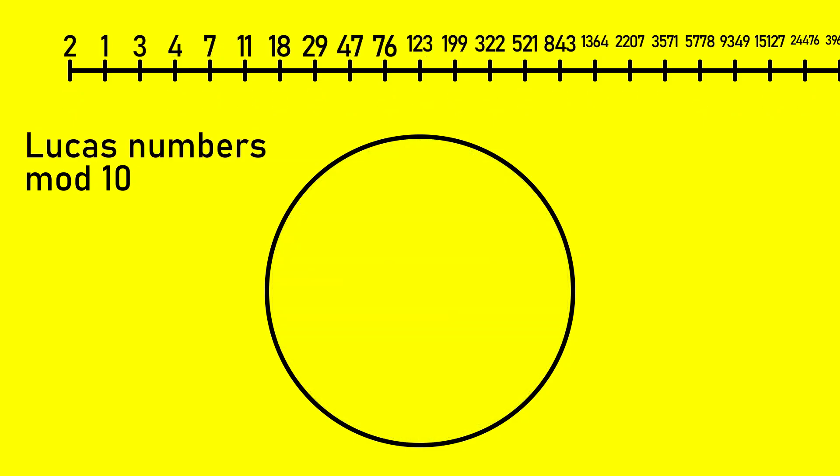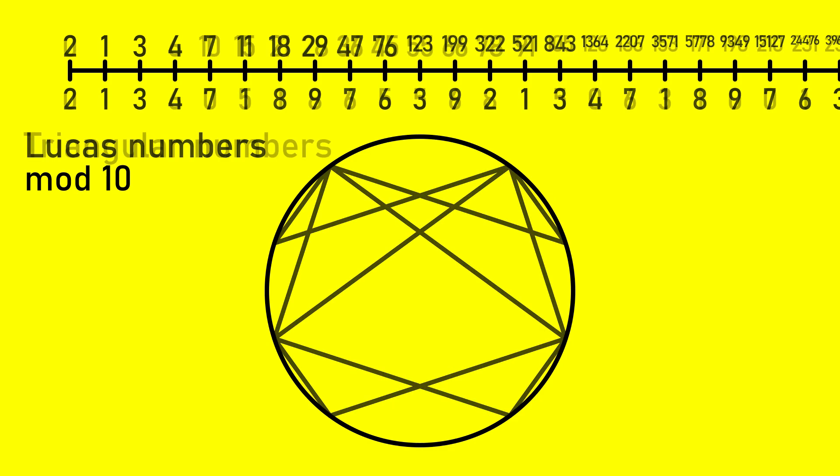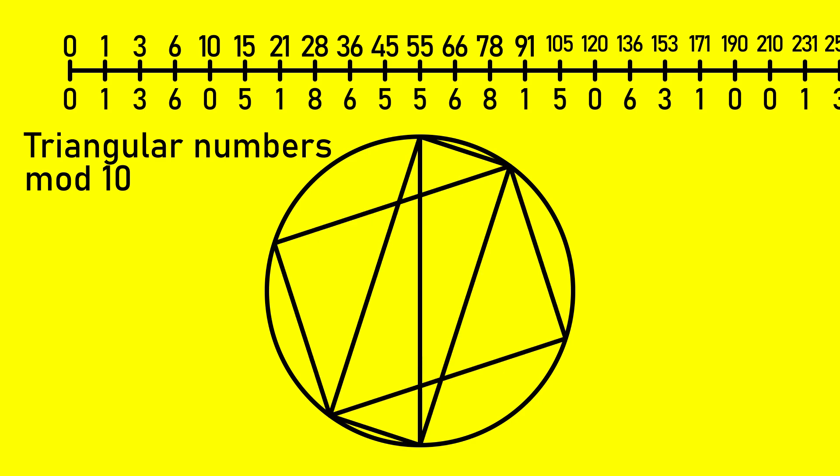If we decided to use Lucas numbers mod 10, for instance, that would give a different set of remainders that happen to loop, but it makes a different design. The same would happen if we use triangular numbers, which use a completely different rule of producing terms compared to the Lucas or Fibonacci numbers. The rule for the triangular numbers is basically just to always increase the difference between two successive terms by one.